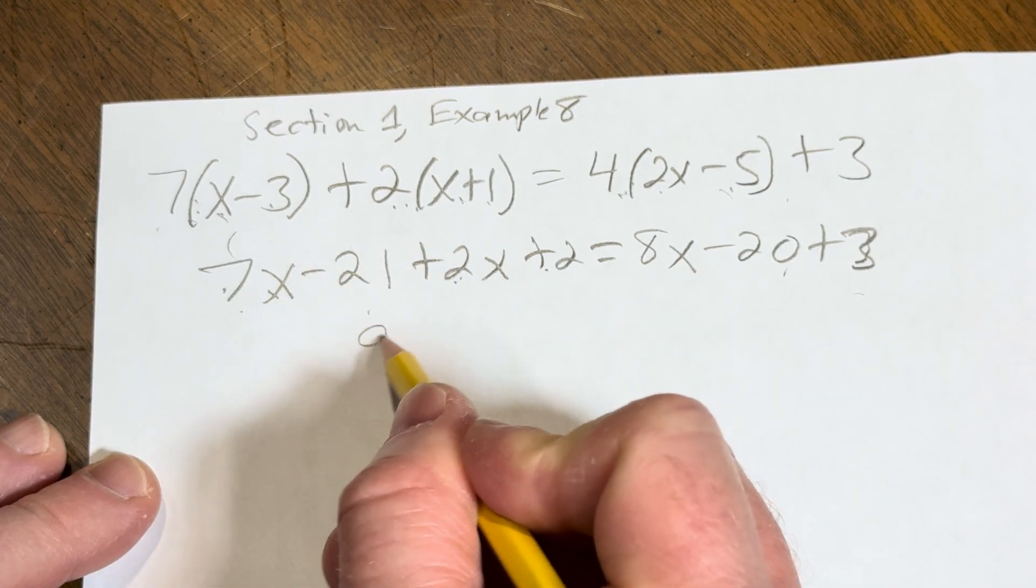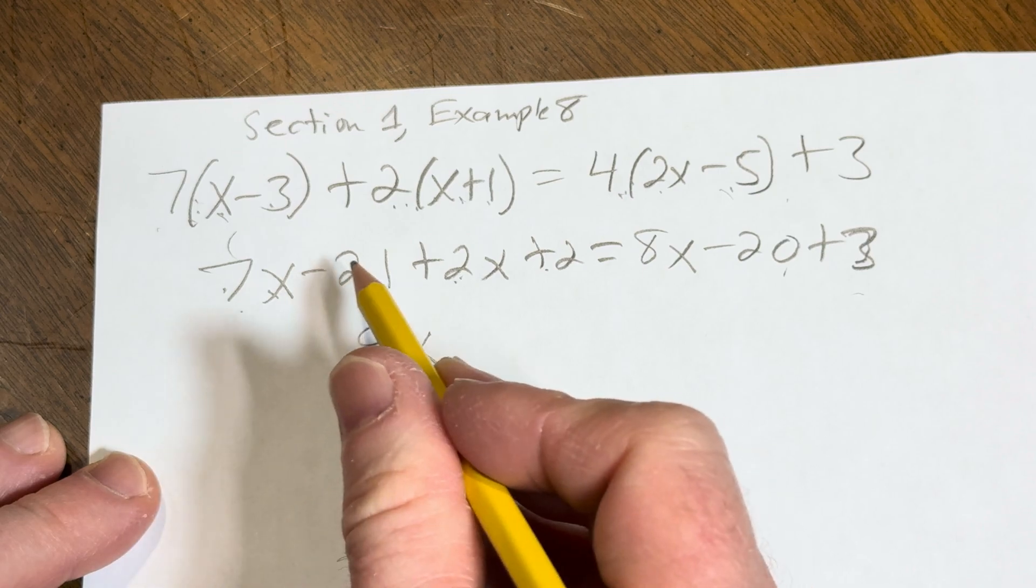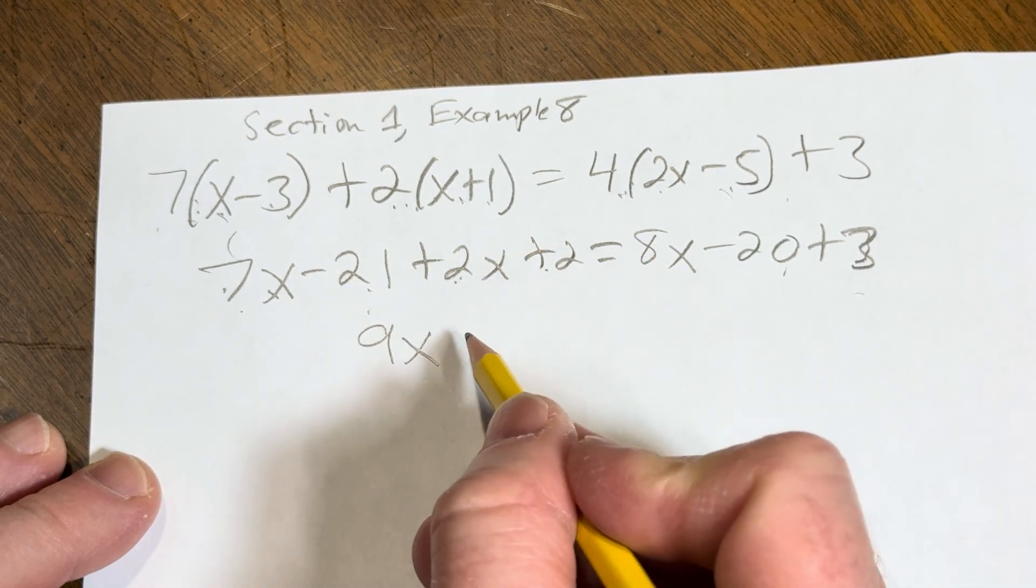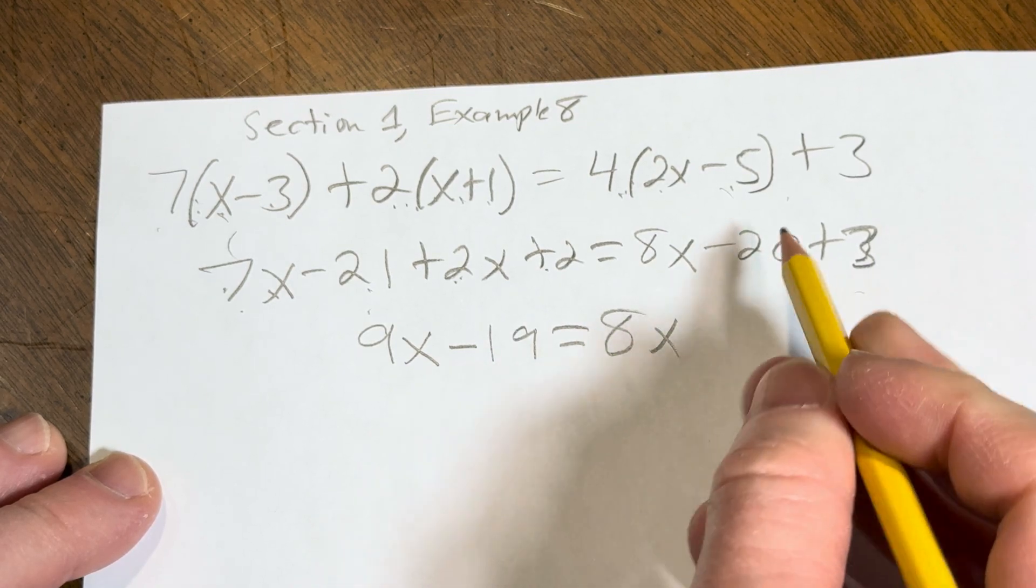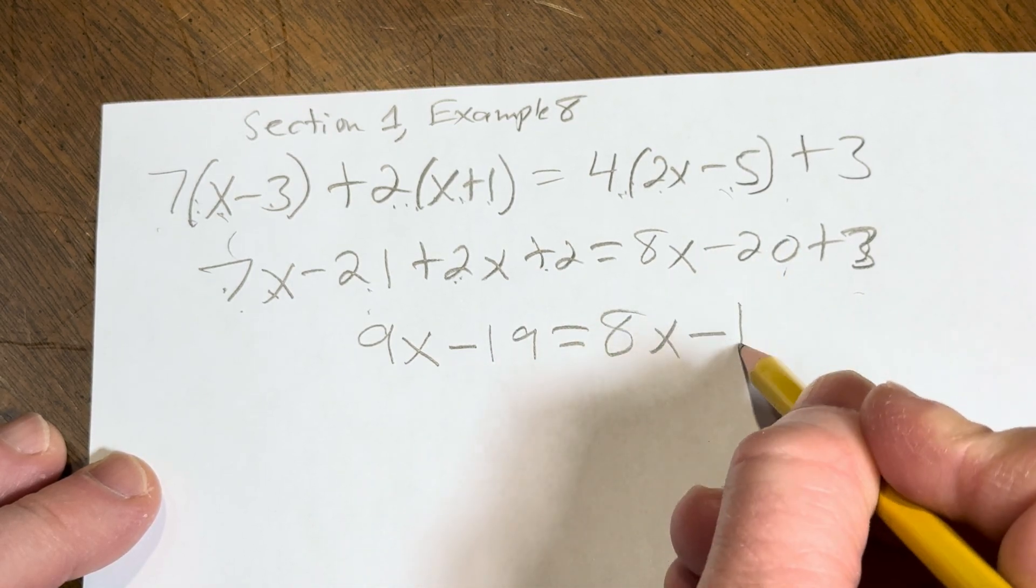Let's see, 7x plus 2x is 9x, negative 21 plus 2 is going to give us negative 19. And here we have 8x, negative 20 plus 3 is negative 17.